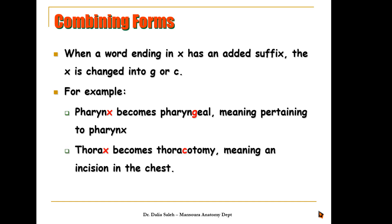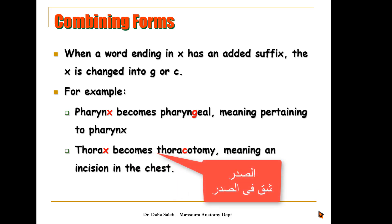Another example, the thorax, which is a word root indicating or meaning the chest. If you want to describe an incision or opening of the thorax and you want to add the suffix otomy, which means incision or opening, the X is changed into C. So we have thoracotomy, which means incision in the chest.